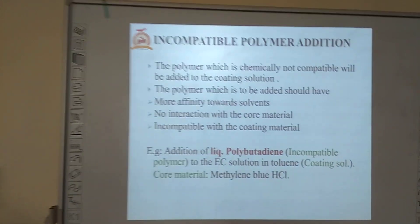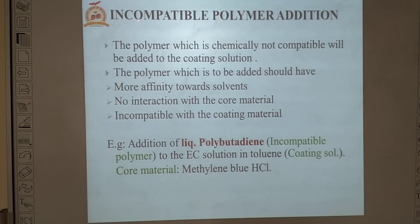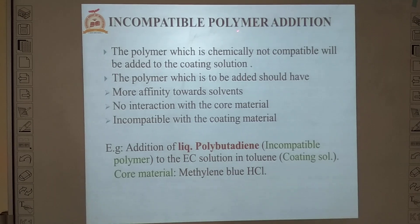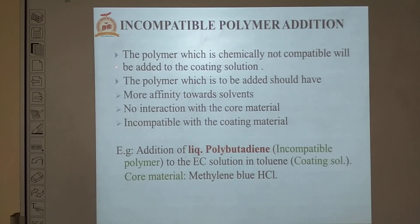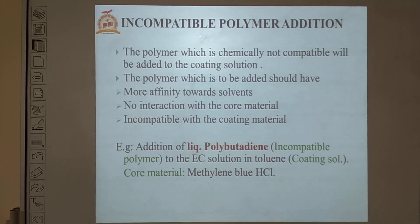The next method is incompatible polymer addition. This method is also used for making microcapsules by adding an incompatible polymer, causing phase separation. The polymer which is chemically not compatible is added to the polymer solution.